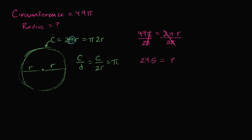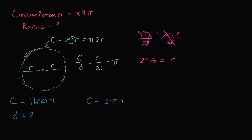Let's do one more of these. Let's say that we have a circle whose circumference C is equal to 1600 pi. The question is: what is the diameter? Just as the circumference can be written as two pi r, or pi times two r, and two r is just the diameter, we can say that the circumference is equal to pi times the diameter.